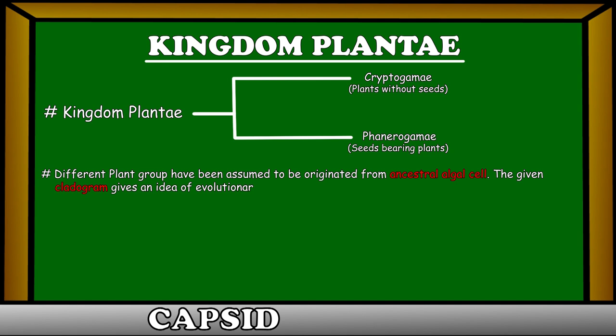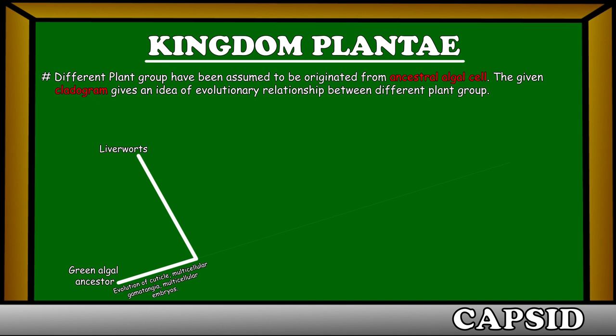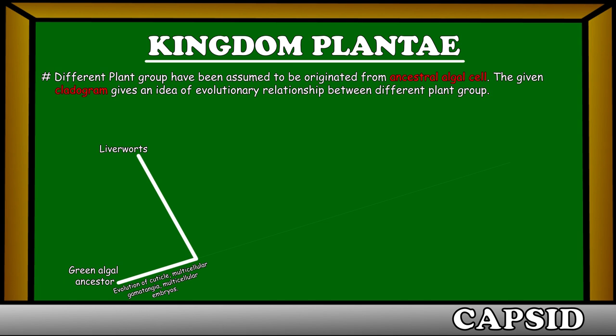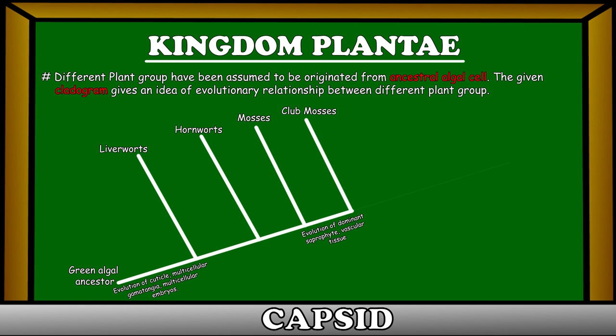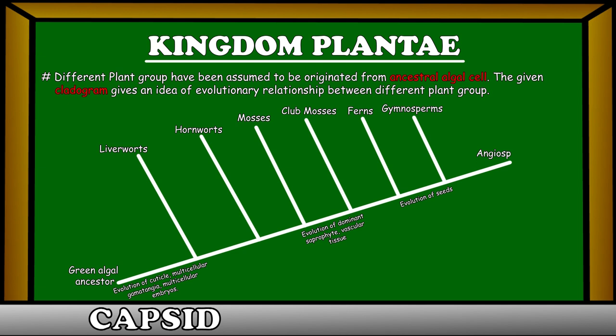Different plant groups are assumed to have originated from an ancestral algal cell. Let's see the cladogram to establish the evolutionary relationship between different plant groups. The ancient members of Kingdom Plantae are green algae, which on evolution of cuticle, multicellular gametangia, and multicellular embryos, get converted into liverworts. Liverworts further evolve into hornworts, then into mosses. Mosses, on evolution of dominant sporophyte and vascular tissue, get converted into club mosses. Club mosses then evolve into ferns. After evolution of seeds, ferns get converted into gymnosperms. Finally, gymnosperms evolve into angiosperms.